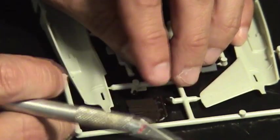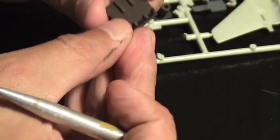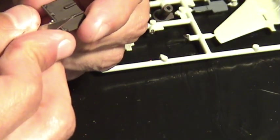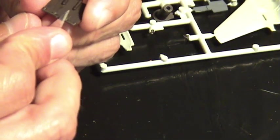To avoid damaging the parts, do not break them apart from the sprue. Use a hobby knife or fine sandpaper to remove any leftover plastic from the parts.